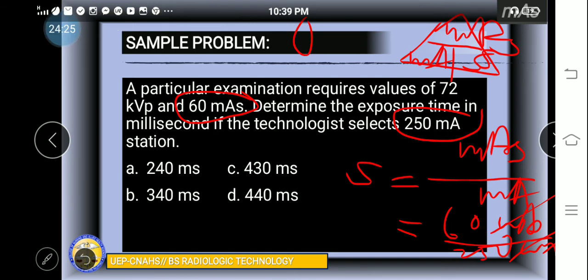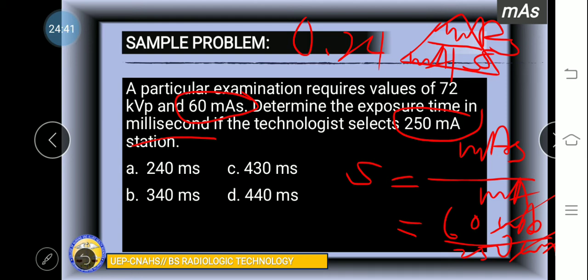Let's substitute: 60 mAs divided by 250 MA. Cancel the MA. Using the calculator, 60 divided by 250. Our answer is 0.24 second. The problem asks for milliseconds. 1000 milliseconds equals one second. Let's move our decimal point three places. Our answer is letter A, 240 millisecond.